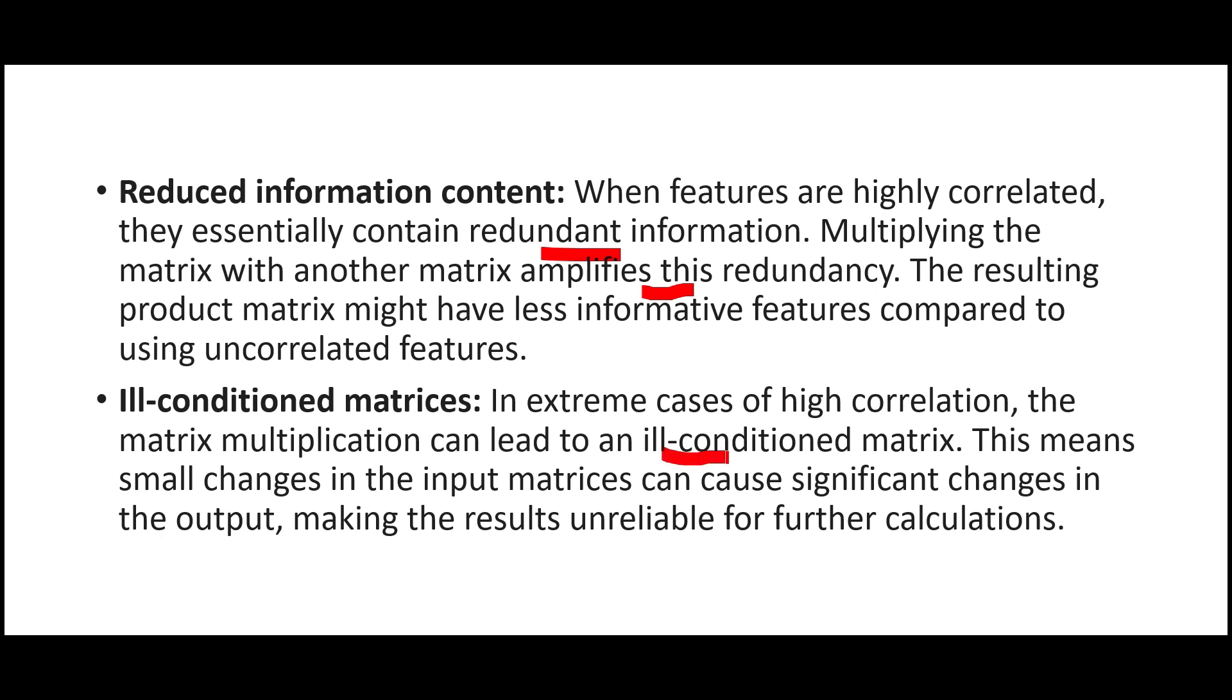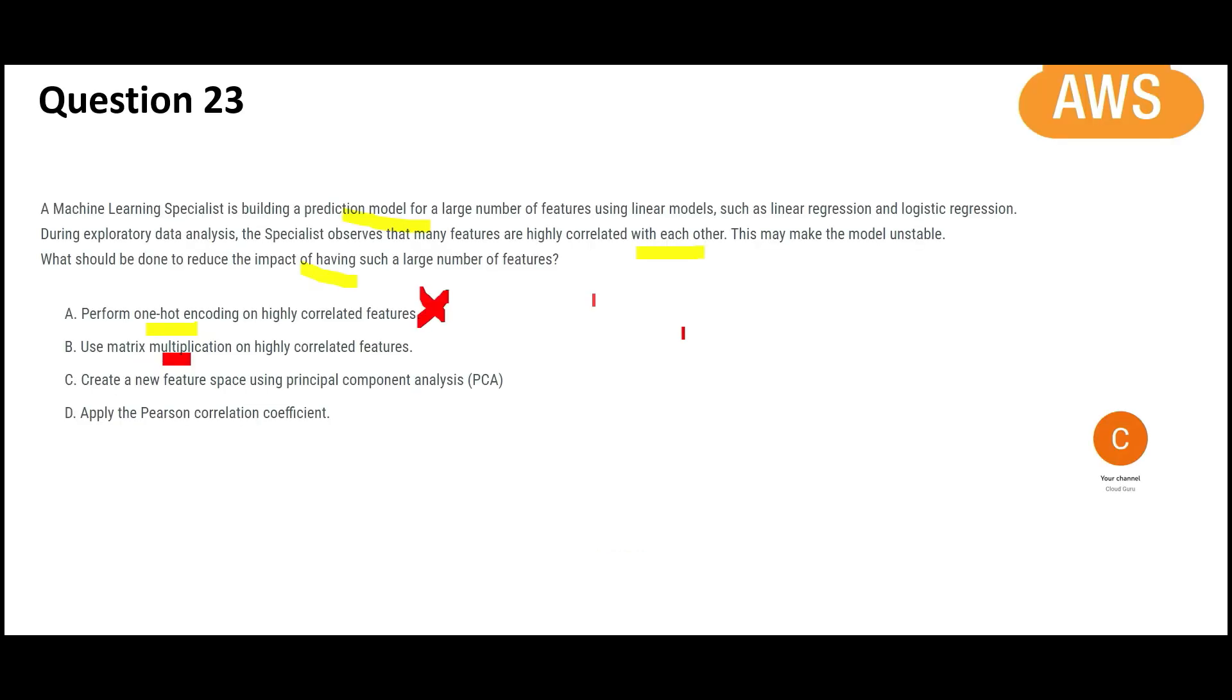And what is the danger it will give you? A ill-conditioned matrix. That means even if you add small changes in the input matrix, the output result would become unreliable. So B is wrong.